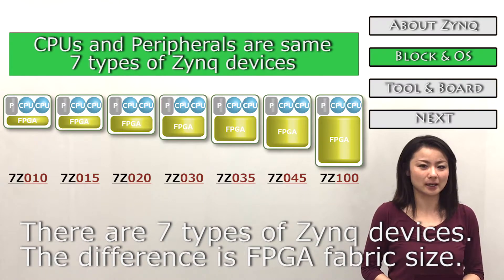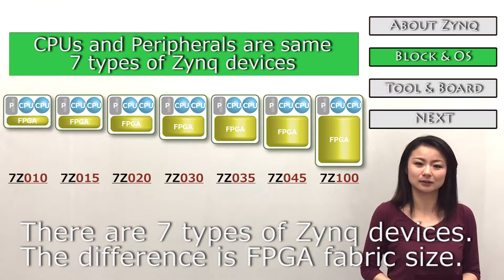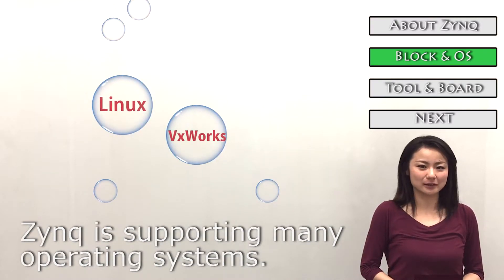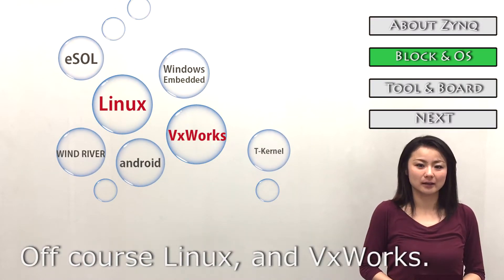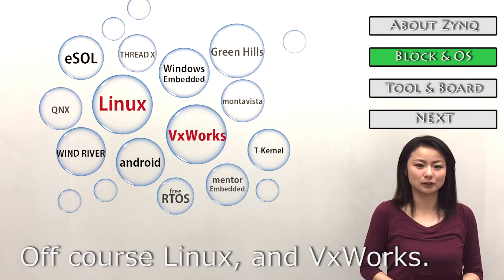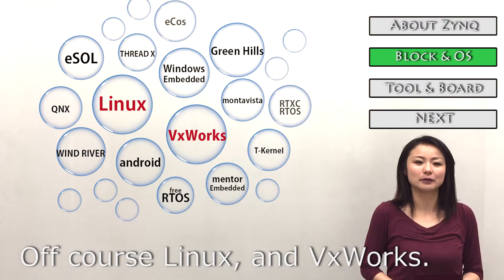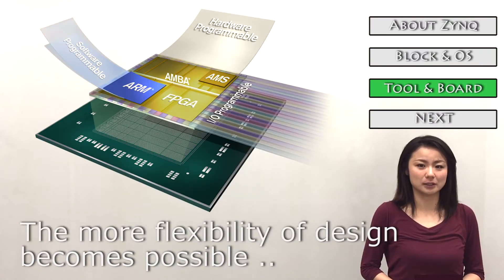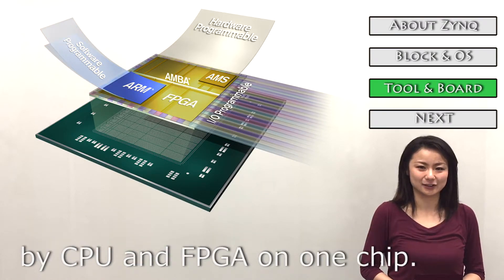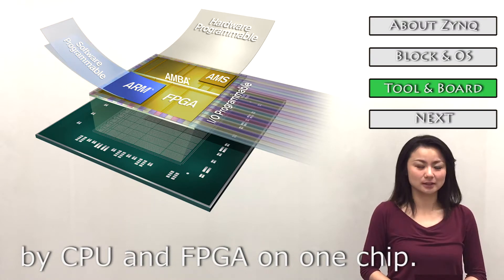There are seven types of Zynq devices according to the fabric size. Zynq supports many operating systems — of course, Linux and bare-metal work. More flexibility of design becomes possible with CPU and FPGA on one chip.